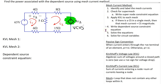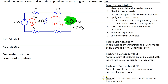Let's see how the mesh current method can be used to solve this circuit. Step one is to identify and label the mesh currents. This circuit has two meshes only. Recall that a mesh is a loop that does not contain any other loops within it. The mesh currents are labeled i1 and i2 and are assumed to be in the clockwise direction.